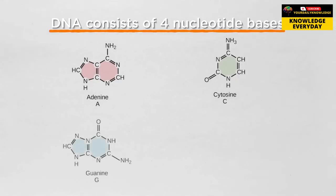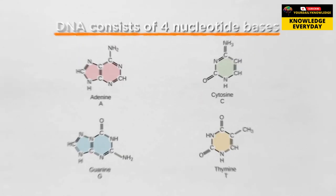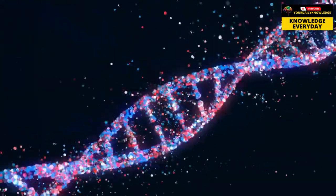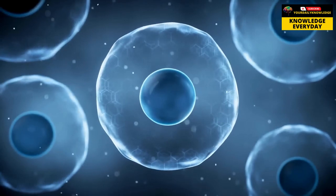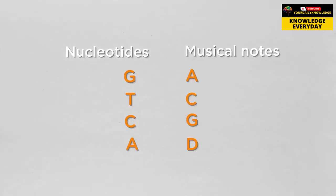DNA, consisting of four nucleotide bases - adenine, cytosine, guanine, and thymine - can be seen as a symphony of genetic information. Each base holds a distinct role in determining the genetic instructions that shape an organism.